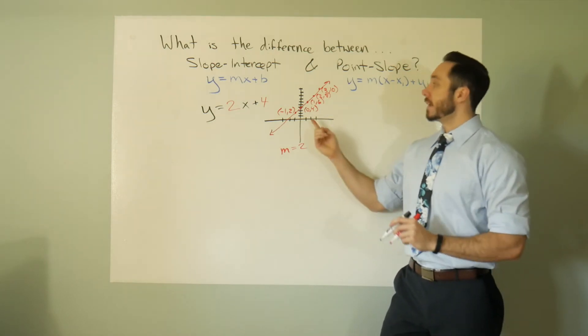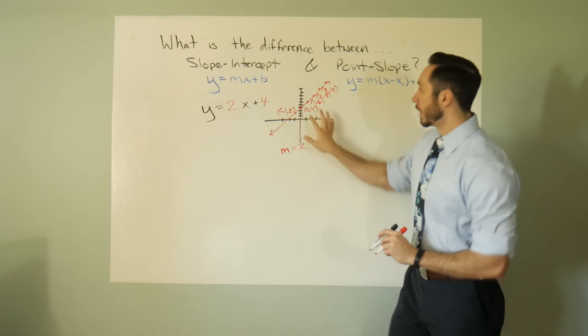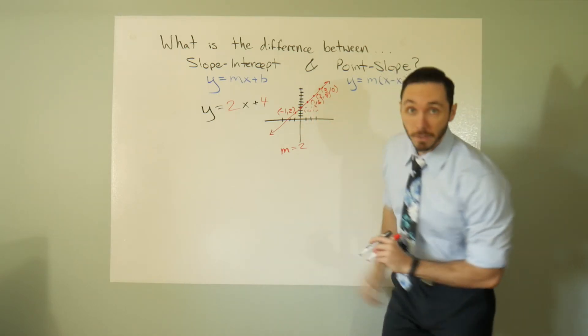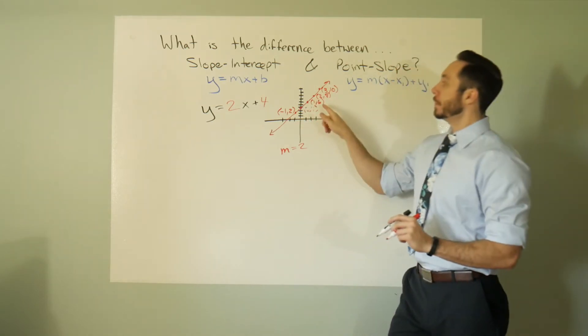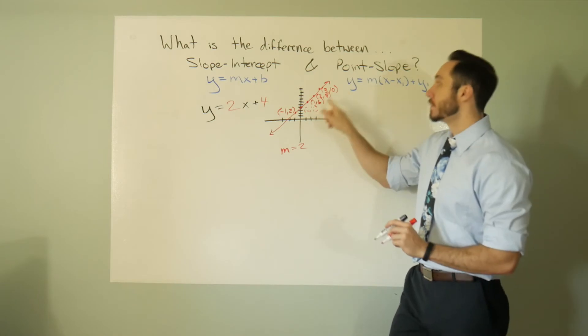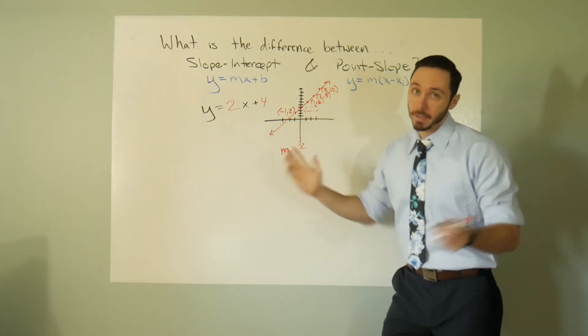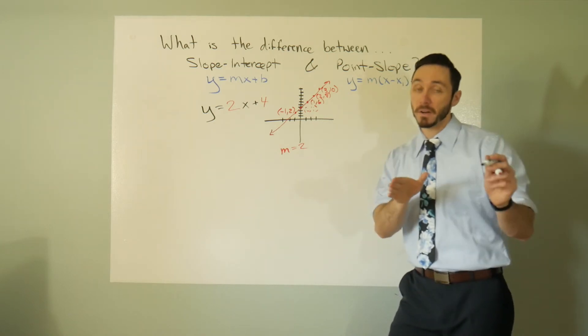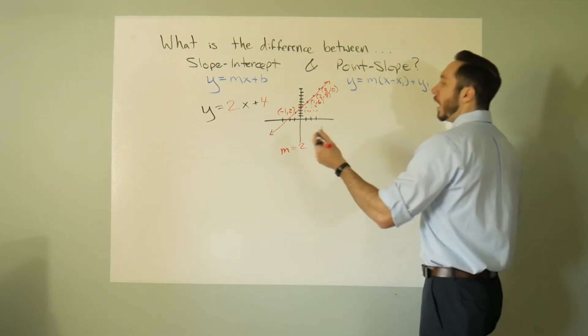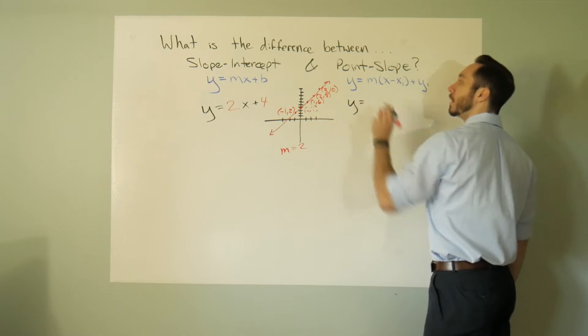But let's pretend for a moment we didn't have this 0, 4. Just like that, it's gone. And I want to play around with 1, 6 or 2, 8 or 3, 10 or negative 1, 2 instead. And I'm actually going to turn through all these, but let's just do one of them. Here I have y is equal to, okay.